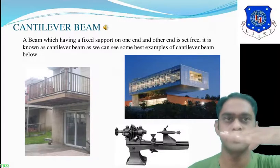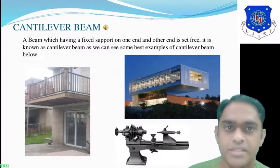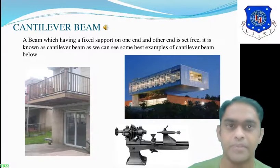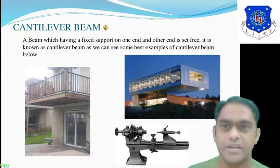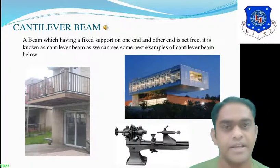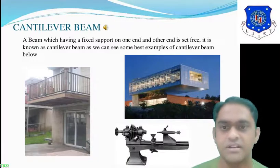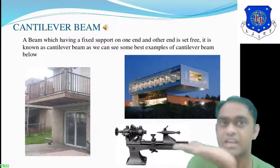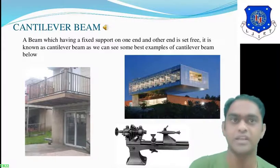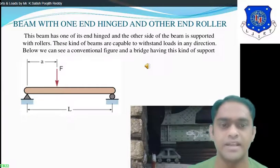Cantilever beam means the beam or structure is fixed at one end only — then this type of beam is known as a cantilever beam. One end is free and one end is fixed. We can see some best examples of cantilever beams in the figure: a structure in which one end of the gallery is free and the other end is fixed at the wall is known as a cantilever beam.